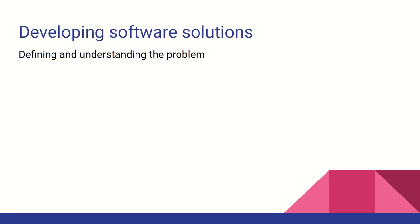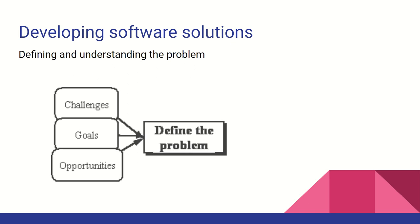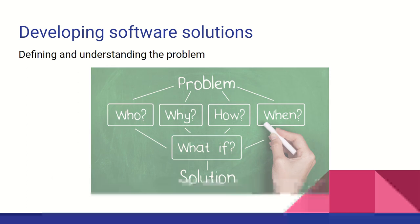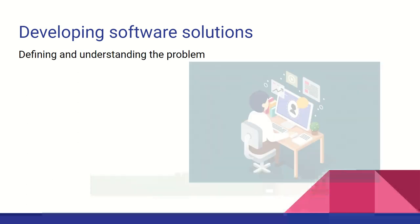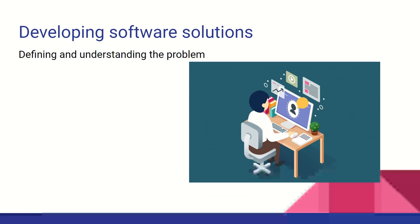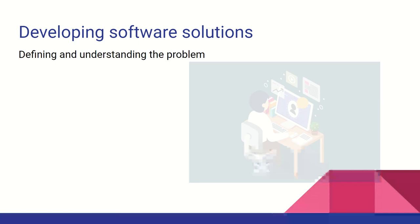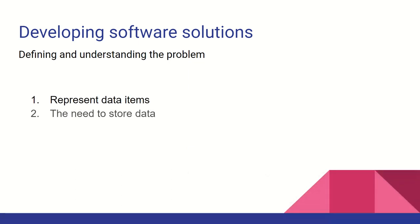Defining and understanding the problem is the first step in the software development cycle. Problem definition involves examining a number of factors, including the needs of users and the boundaries within which the solution has to operate. When defining the needs of a system, we need to focus on more than the needs of the users. The user's needs are an important factor, but there are other considerations. The needs of the system will also involve the need to represent data, the need to store data, the need to process and output data.